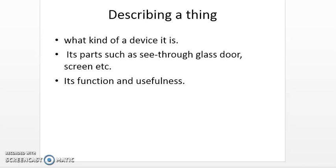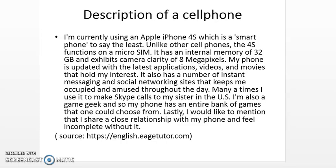If you are talking about an object that you have used in the past — for example, a particular cell phone you may have used — you may make use of simple past tense as well. Here I will read out the description of a cell phone: 'I am currently using an Apple iPhone 4S, which is a smartphone to say the least. Unlike other cell phones, the 4S functions on a micro SIM. It has an internal memory of 32 GB and exhibits camera clarity of 8 megapixels. My phone is updated with the latest applications, videos, and movies that hold my interest. It also has a number of instant messaging and social networking sites that keep me occupied and amused throughout the day. Many a time I use it to make Skype calls to my sister in the US. I am also a game geek, and so my phone has an entire bank of games that one could choose from.'